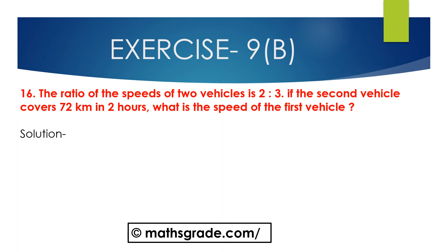Now we will solve question number 16. The ratio of the speeds of two vehicles is 2 is to 3. If the second vehicle covers 72 km in 2 hours, what is the speed of the first vehicle? It is given that the ratio of speeds is 2 is to 3. Let the speeds of the two vehicles be 2x and 3x.